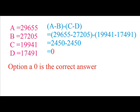On substituting the value of A, B, C and D in the question, we get the value of A minus B minus C minus D is 0. Option A, 0, is the correct answer.